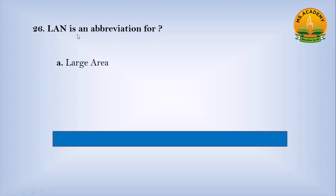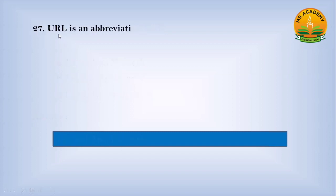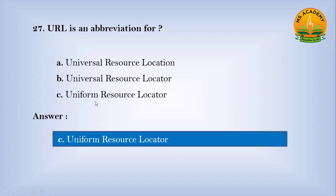LAN is an abbreviation for dash. Option A Large Area Network, option B Local Area Network, option C Large Access Network. Answer: B. Number Local Area Network. URL is an abbreviation for. Option A Universal Resource Location, option B Universal Resource Locator, option C Uniform Resource Locator. Answer: C. Number Uniform Resource Locator.